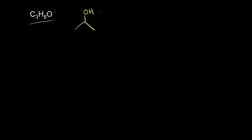Now let's draw all of the structural isomers that have the molecular formula C3H8O. We'll start with the molecule we talked about in the bond line structure videos — that molecule looked like this. We had three carbons and then an OH coming off of the central carbon. Let's expand that out and make sure this has the correct molecular formula. We have our three carbons, and on the middle carbon we have an OH — an oxygen bonded to a hydrogen. I'll put lone pairs of electrons on this oxygen.